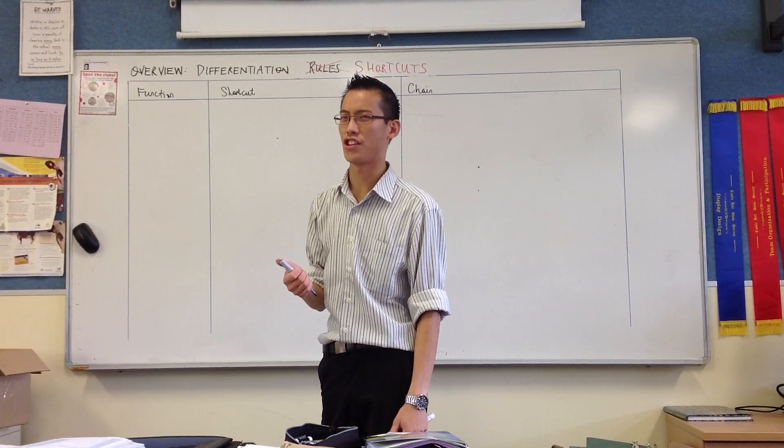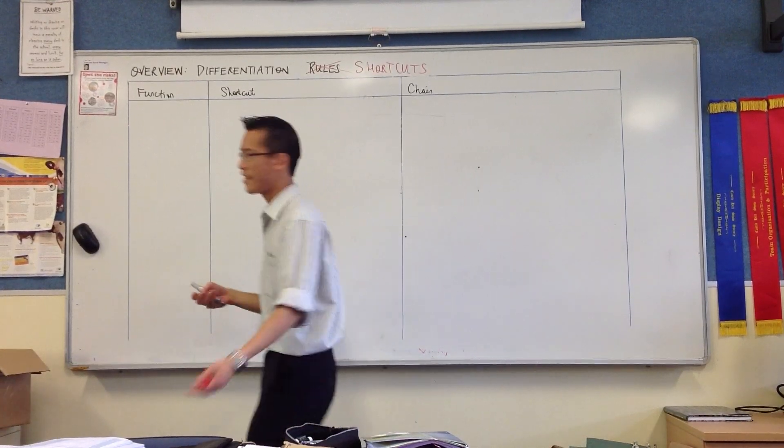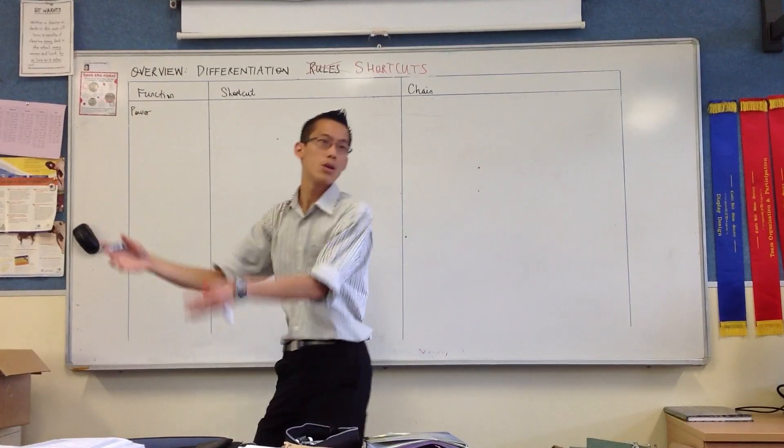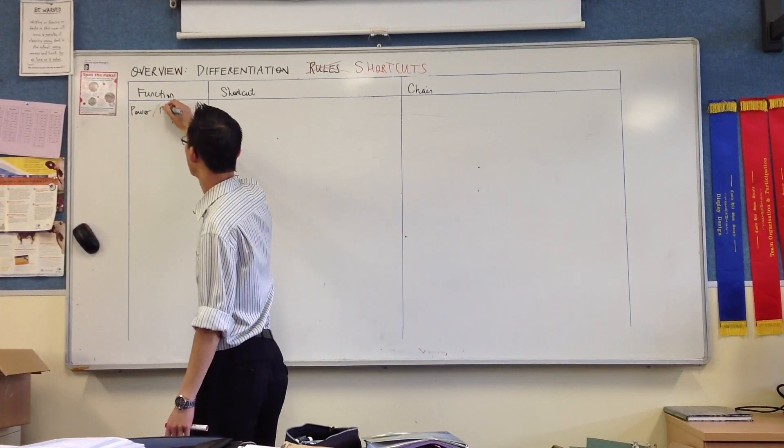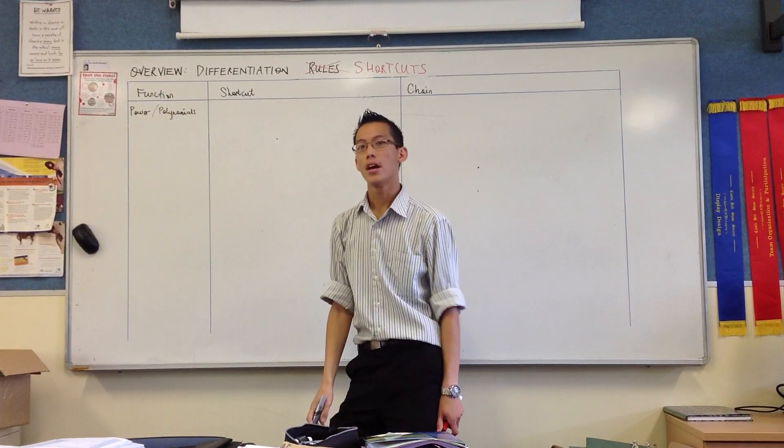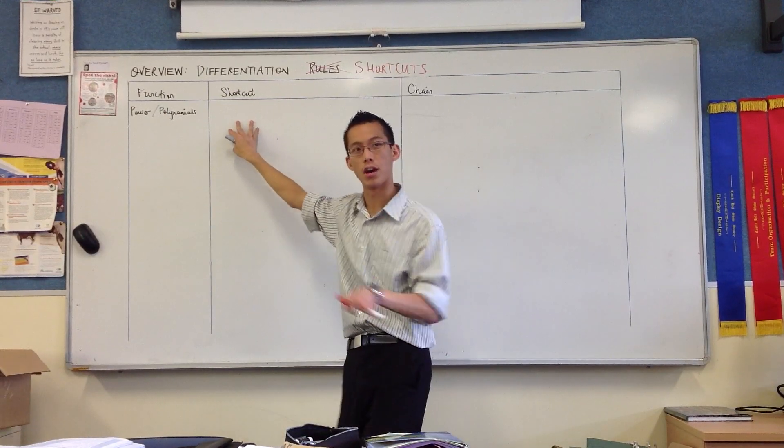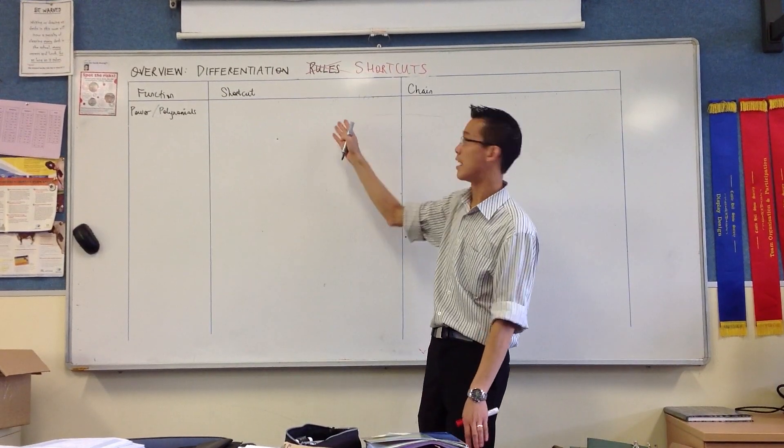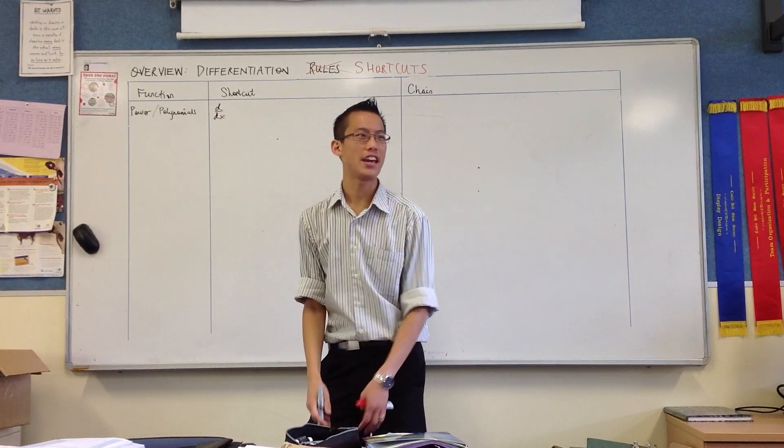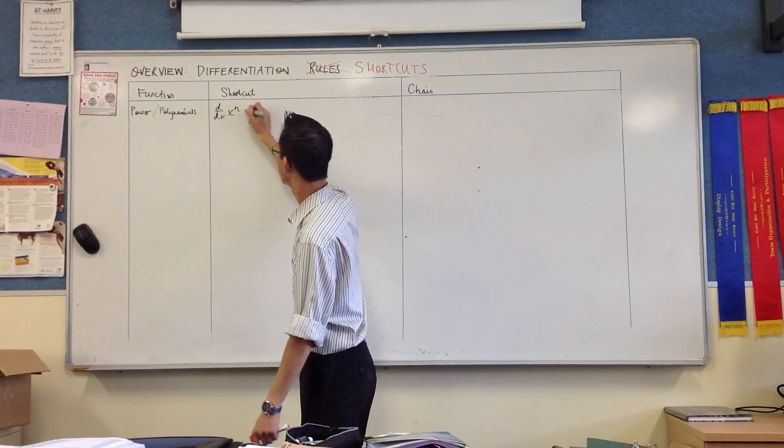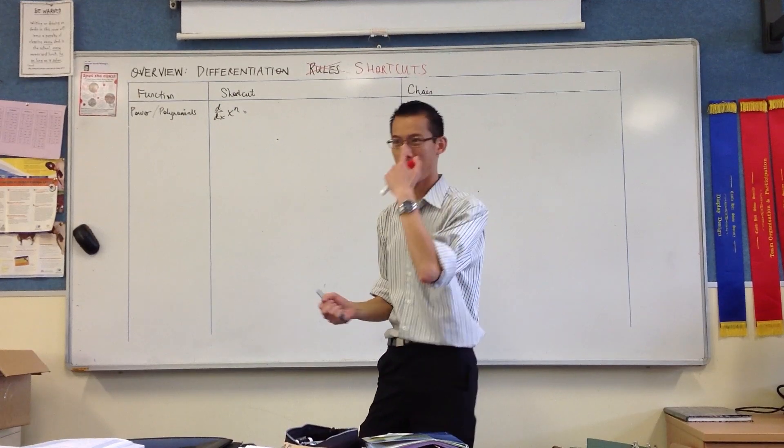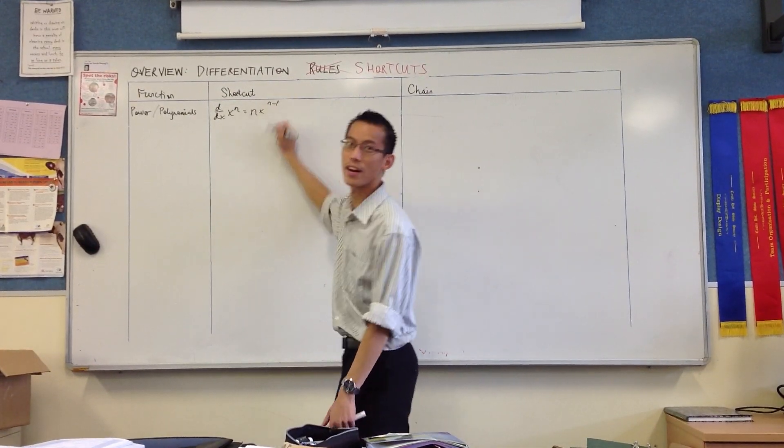What was the very first kind of function we learned how to differentiate? That's right. The name I would give that is something raised to a power. If you have a whole string of them, we would call them polynomials. So if I'm differentiating something raised to a power, x to the n, we've been doing this for a few weeks now. What's the shortcut? n x to the n minus 1.